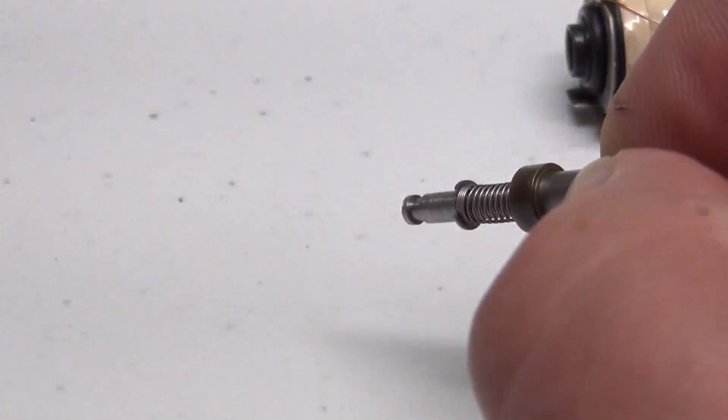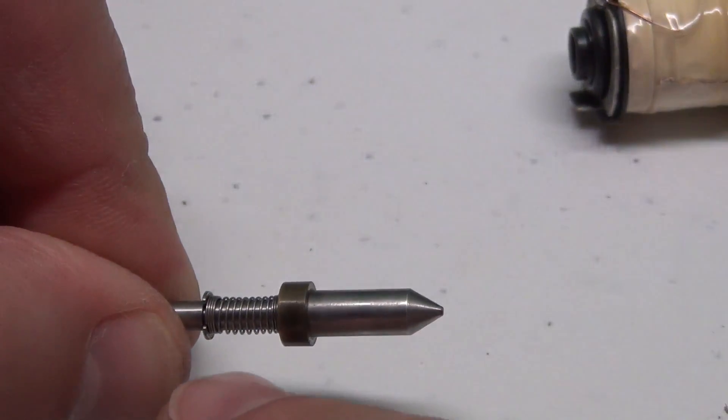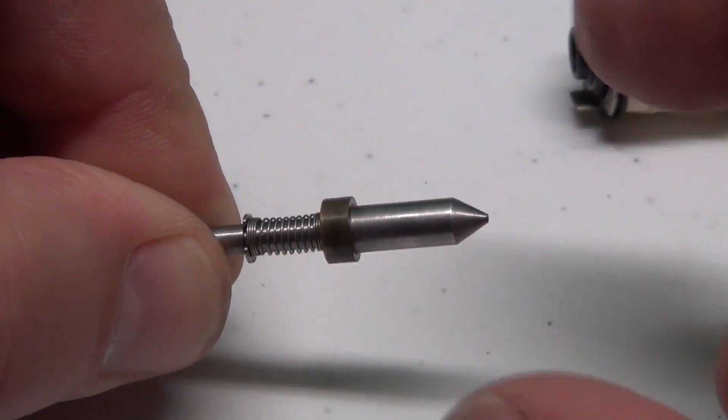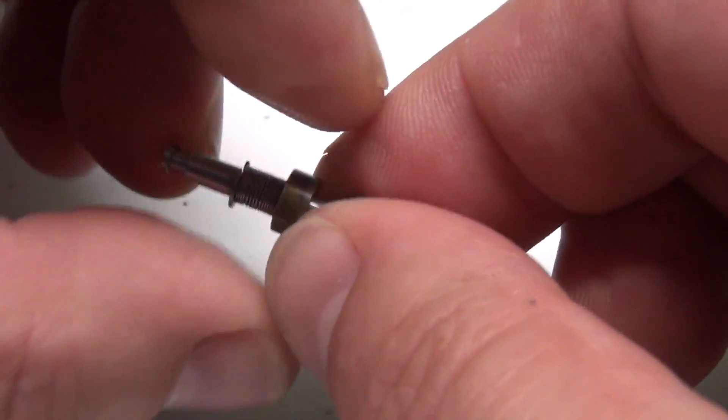This end can freely move in there. And then there is a little spring, where this ring here goes back and forth.